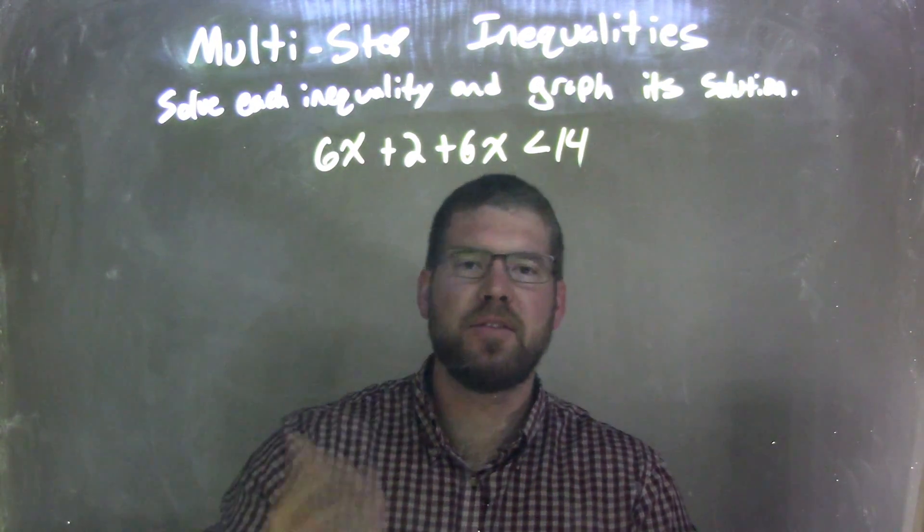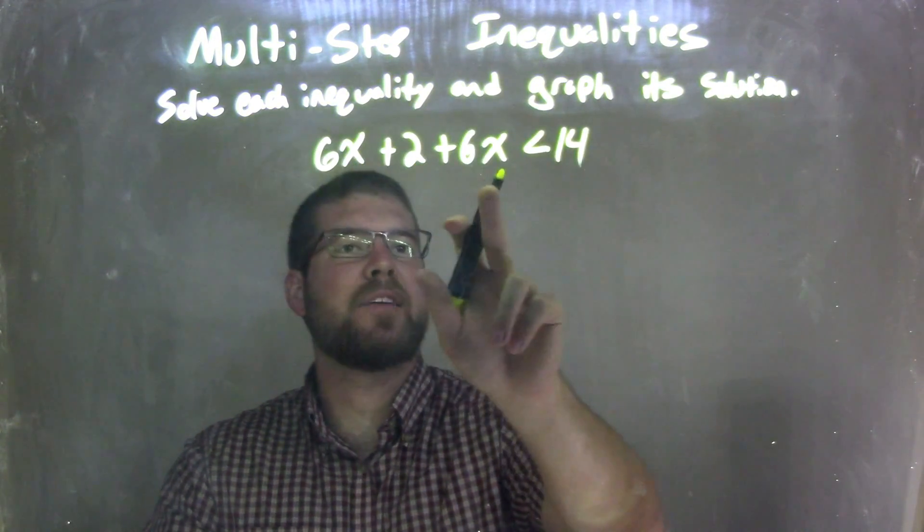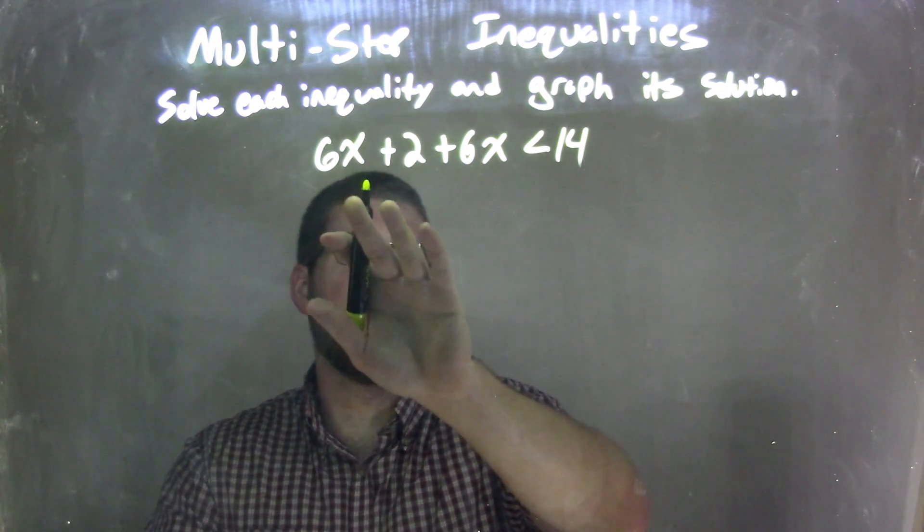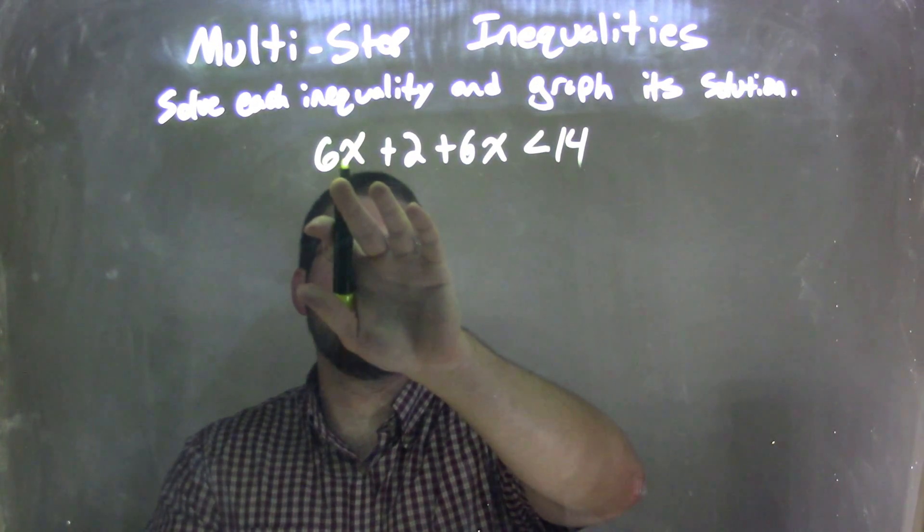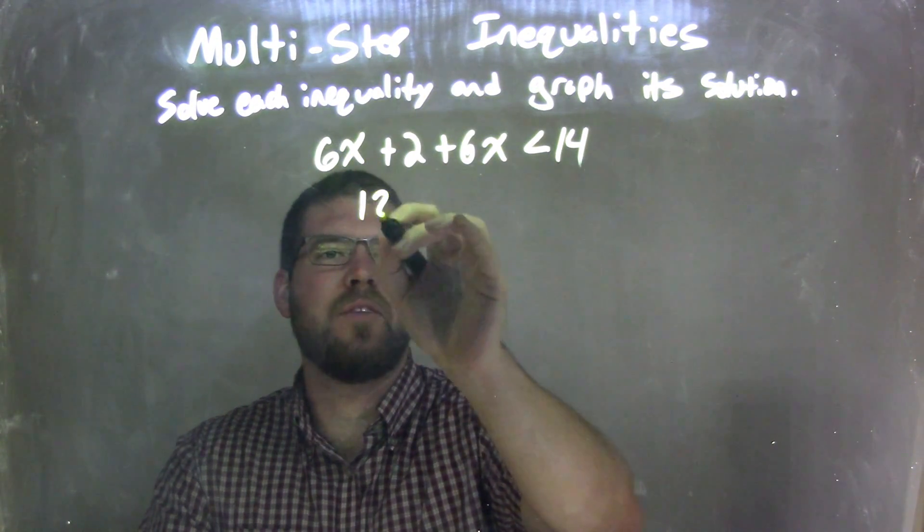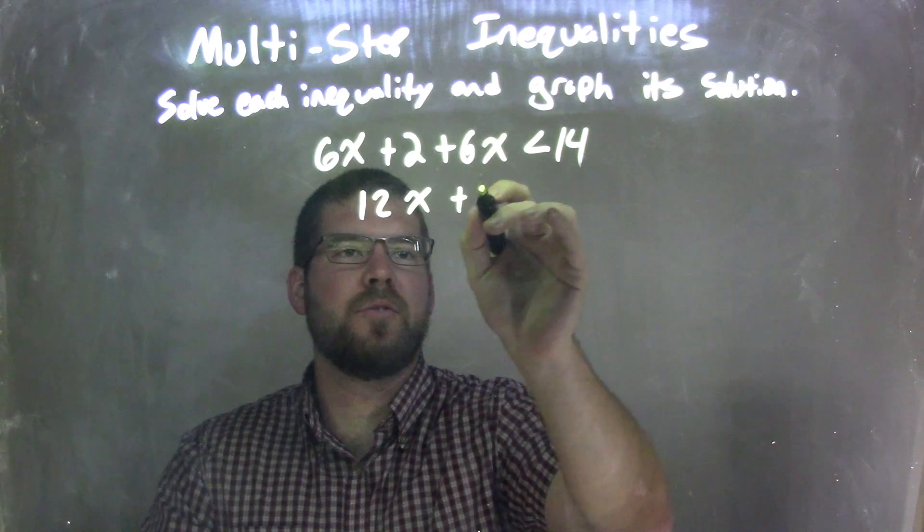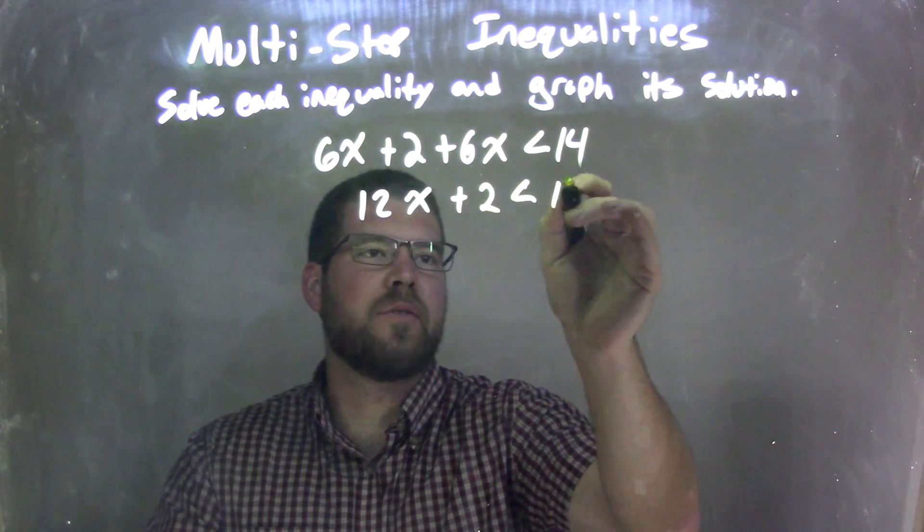I need to combine my x's together on that one side. So 6x plus 6x, I'm kind of going to jump the gun here, skip the 2. 6x plus 6x is 12x, and I'm left with the 2 there is less than 14.